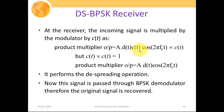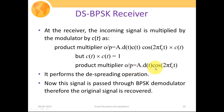Since C(t) can only be +1 or −1, C²(t) = 1 always. The product multiplier output therefore reduces to A·D(t)·cos(2πf_c·t) — the CT term is eliminated. This performs the despreading operation, converting the wideband signal back into a narrowband signal. When this signal is passed to the BPSK demodulator with the same carrier A·cos(2πf_c·t), the original binary data sequence is recovered.